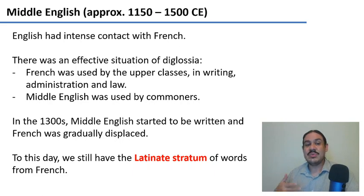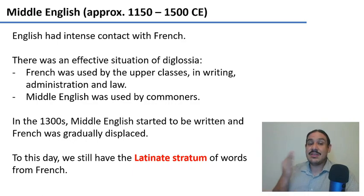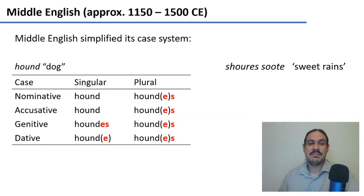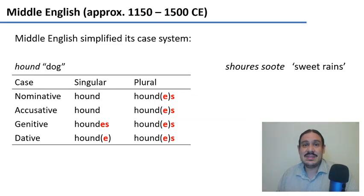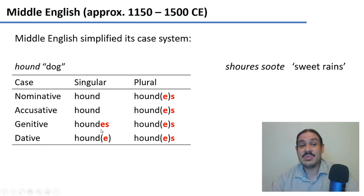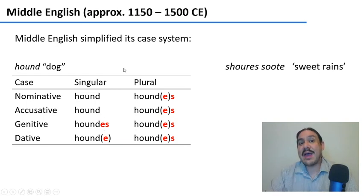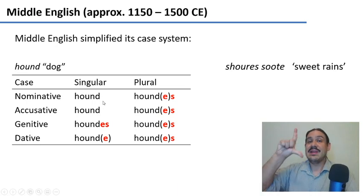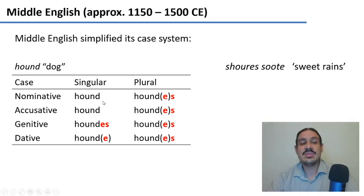Around the 1300s, Middle English began to be written again — this is when we get works like the Canterbury Tales — and French was gradually displaced. The major change at this time was that Middle English simplified the case system. The only case really preserved was the genitive — 'hondis' meaning 'of the dog' — which we still use today as in 'hound's bone.' Otherwise, there was a leveling of cases so they all began to resemble the nominative, reducing morphological complexity.